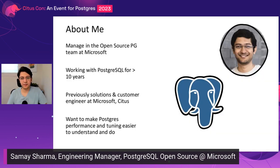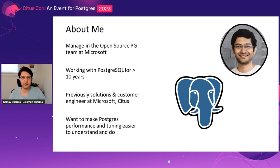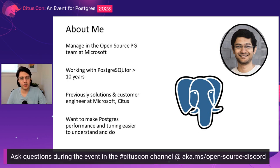A bit about myself. I am Samai Sharma. I manage the open source Postgres team at Microsoft. Our goal is to make contributions to open source Postgres to make it better for everybody. I've been working with Postgres for over a decade now, within multiple roles as an extension developer at Citus, then working mainly with customers for six to seven years, helping them get the most out of their Postgres setup.